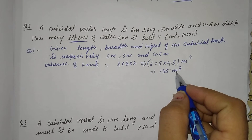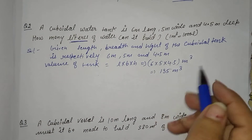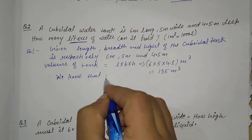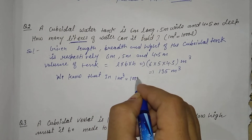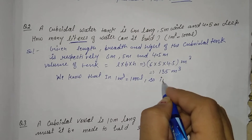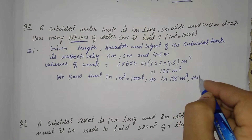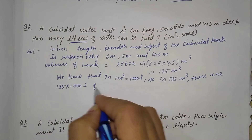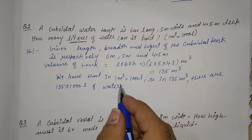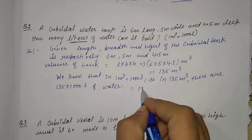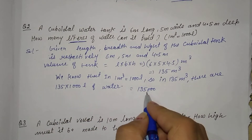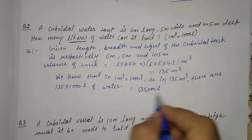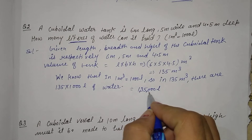Our answer is in meter cube, but we need to answer in liters. So we will convert it. We know that 1 meter cube = 1000 liters. So in 135 meter cube, there are 135 into 1000 liters of water. That gives us 135,000 liters. So the volume of the tank is 135,000 liters.